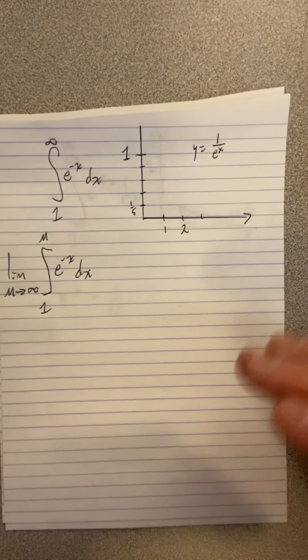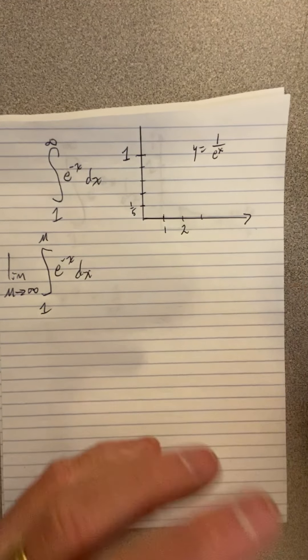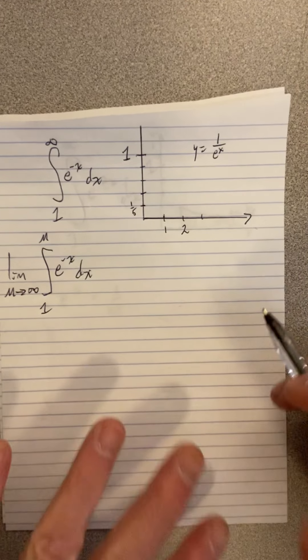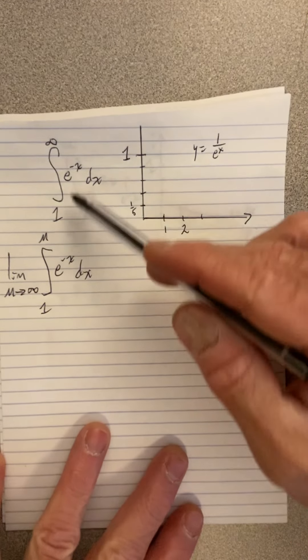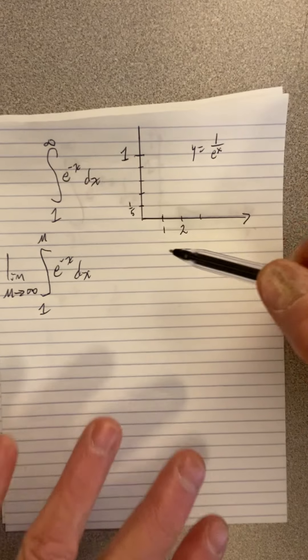Now to use the direct comparison test, you're going to compare two integrals, one of which you know something about. So I'm first going to look at this improper integral with unbounded domain.